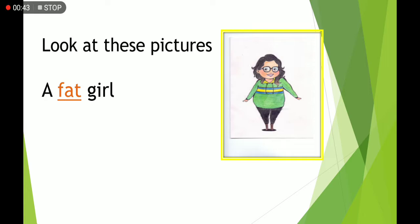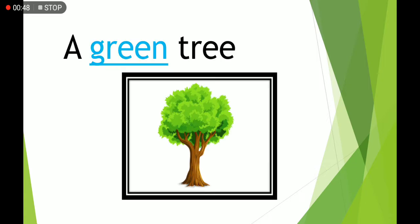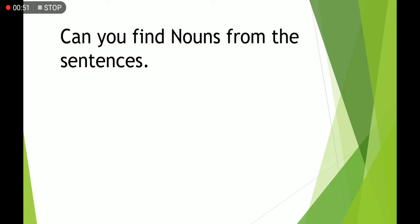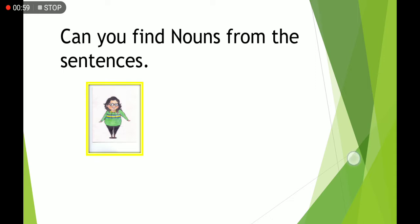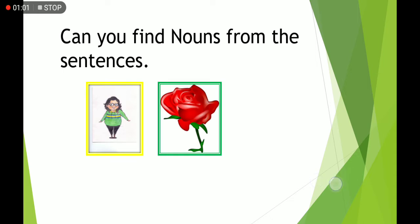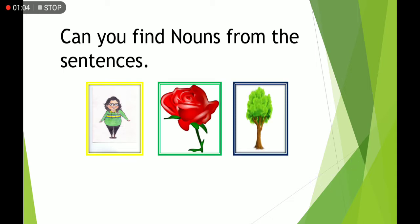A fat girl. A lovely rose. A green tree. Can you find nouns from these sentences? Very good — girl, rose, and tree. They are nouns.